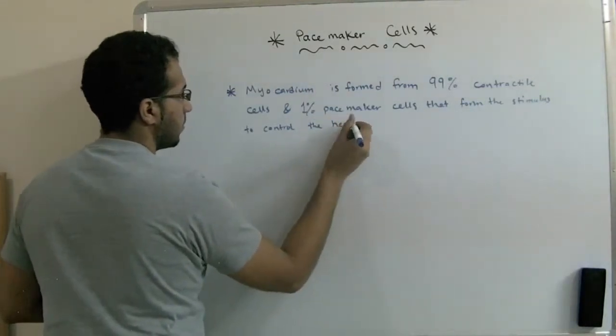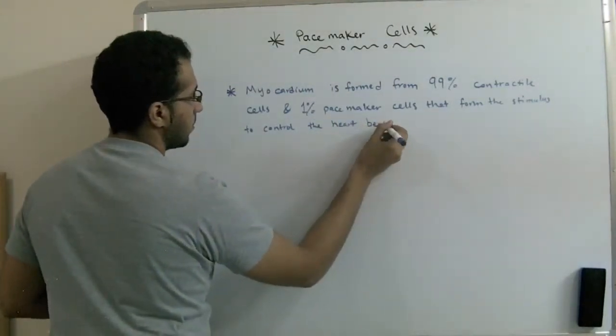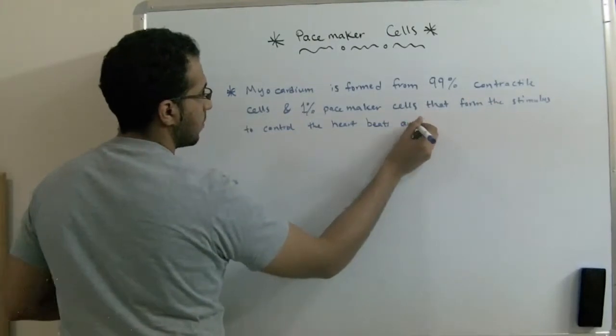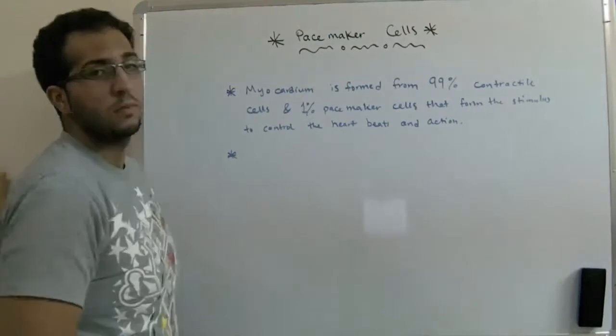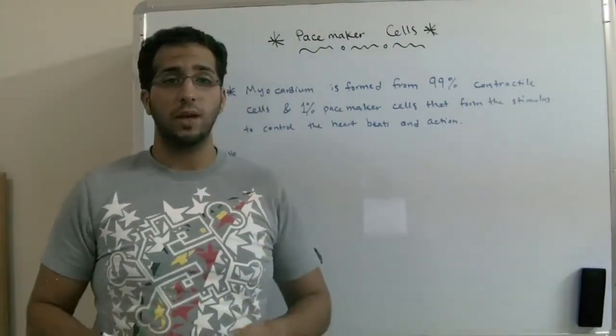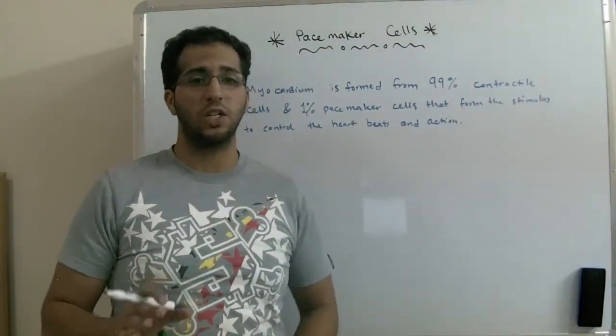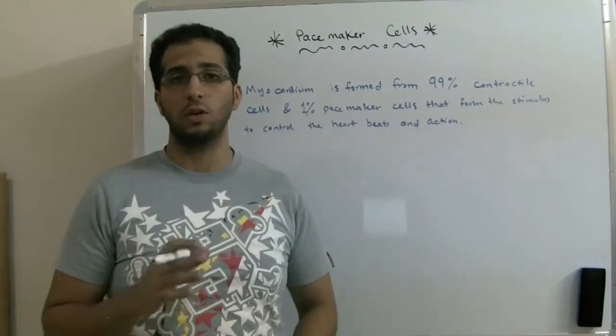Now we're going to talk about the pacemaker cells in the heart. These pacemaker cells are organized into specialized excitatory and conductive systems.